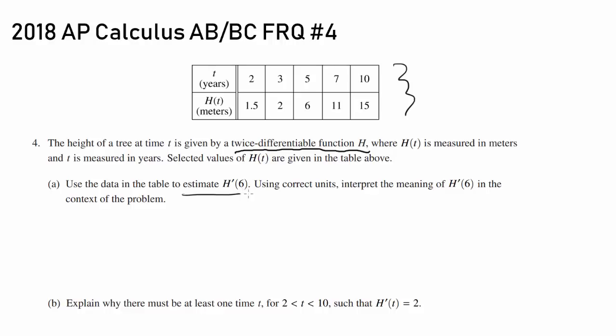Use the data in the table to estimate H'(6). We have t of 5 and t of 7, and we have our value of H at t=5 and t=7. So we can approximate H'(6) using the average rate of change from 5 to 7, because 6 is right in between 5 and 7, and because 5 and 7 are pretty close to 6. So H'(6) is approximately H(7) minus H(5) over 7 minus 5, or 2.